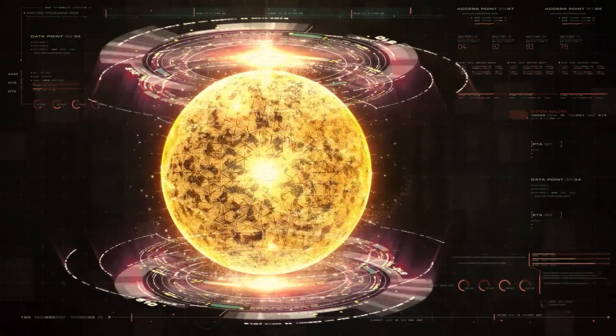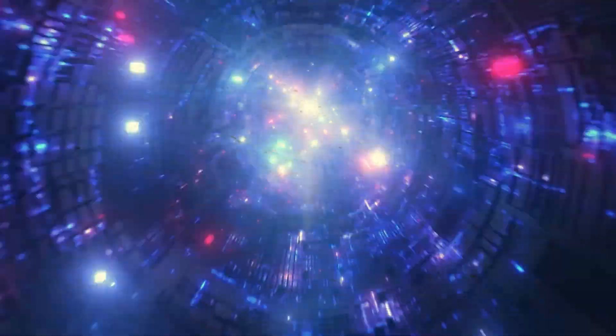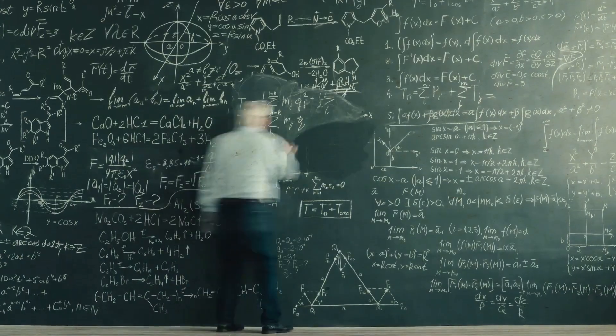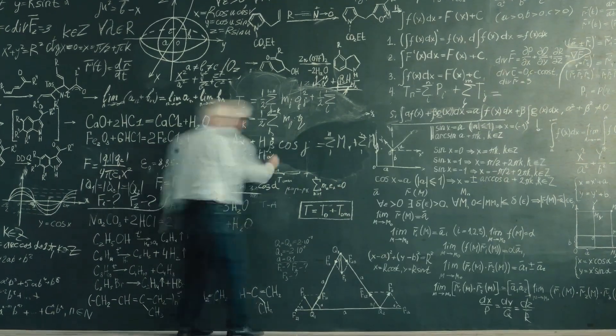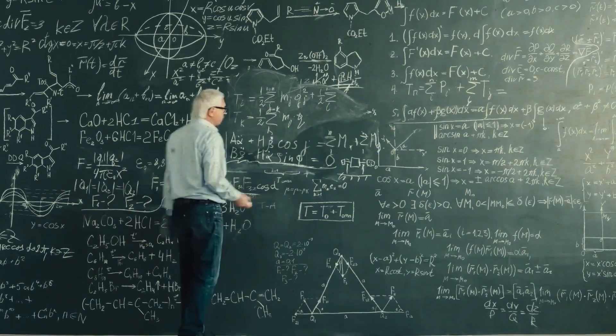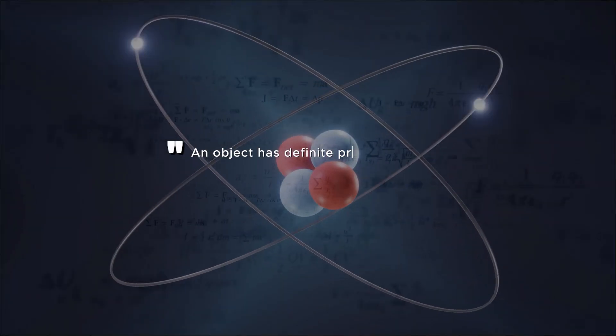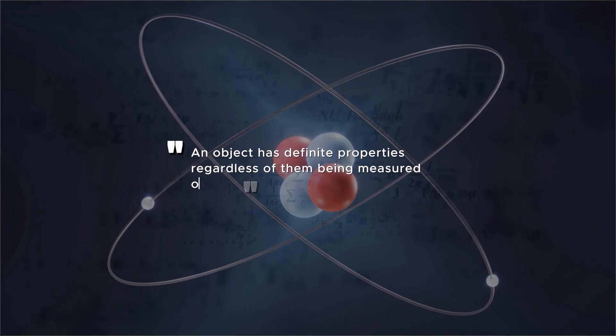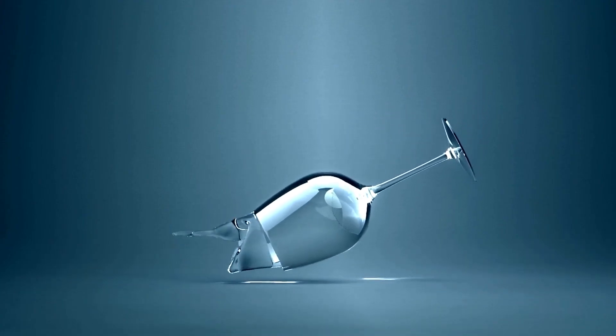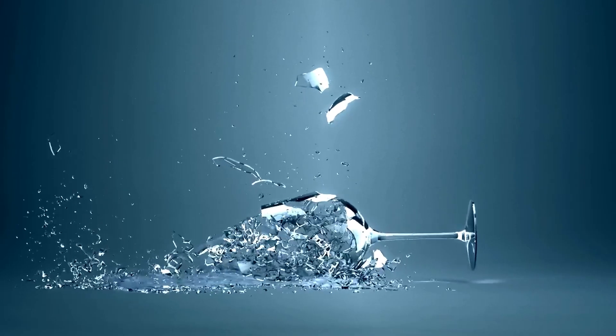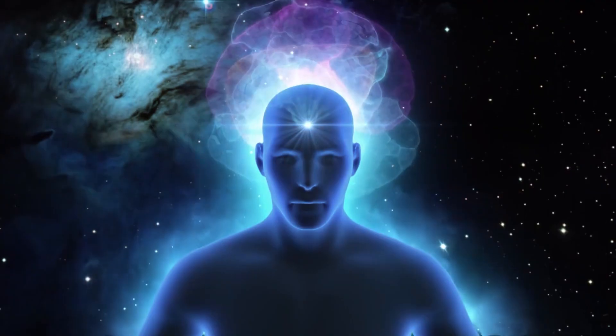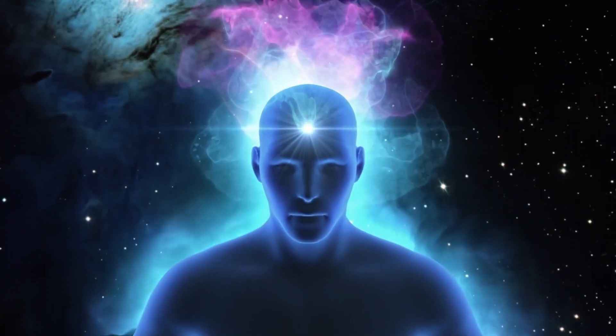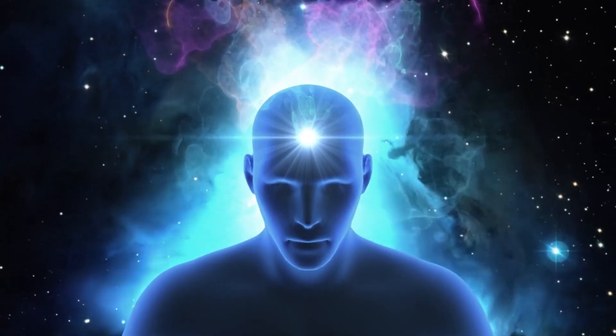Defining reality is quite tricky because there are tiny particles in the universe that we cannot see but they exist. We cannot touch the air but it exists. According to physics, 'real' means that an object has definite properties regardless of them being measured or not. For example, if a glass breaks, it'll make a sound whether we're present there or not. On the contrary, 'local' means that objects can only be influenced by their surroundings and this influence cannot travel faster than light.